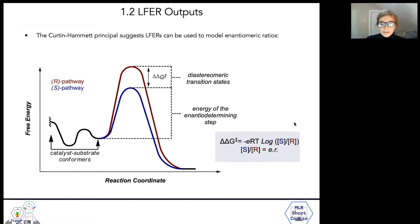And obviously this should call to mind the Curtin-Hammett principle, and as a reminder this principle suggests that the product distribution of a reaction reflects the difference in energy between rate limiting transition states, and the energy of the products, but as we all know enantiomers have essentially the same energy.